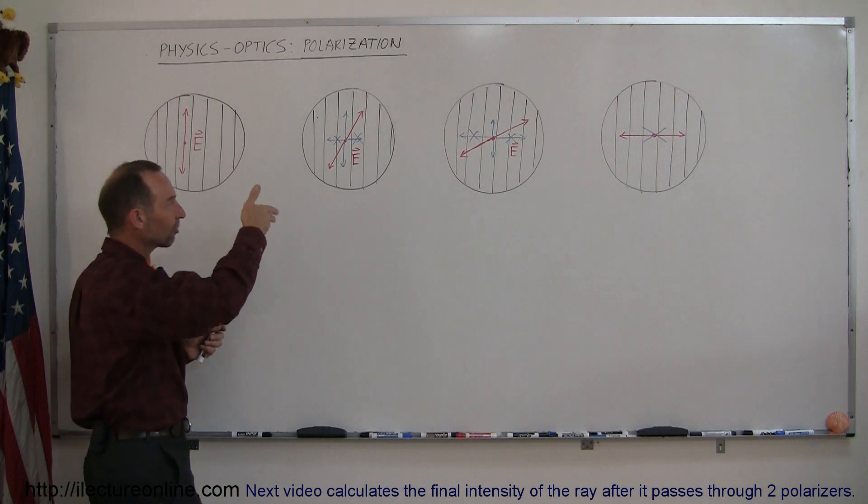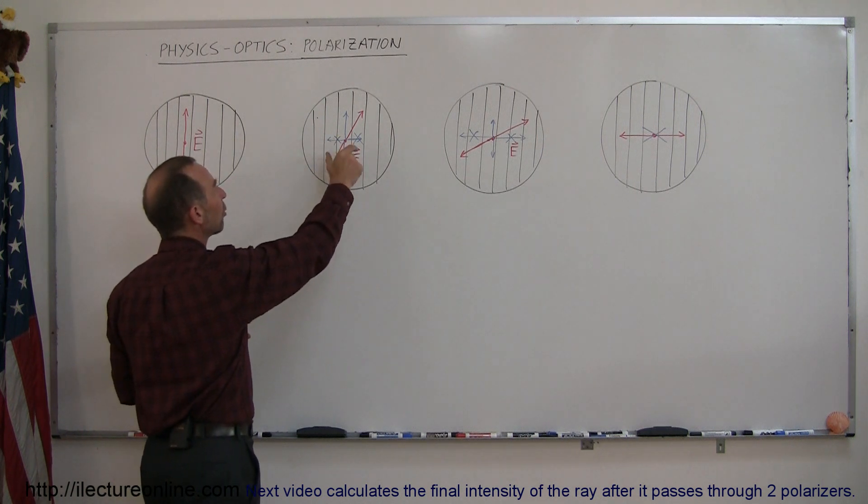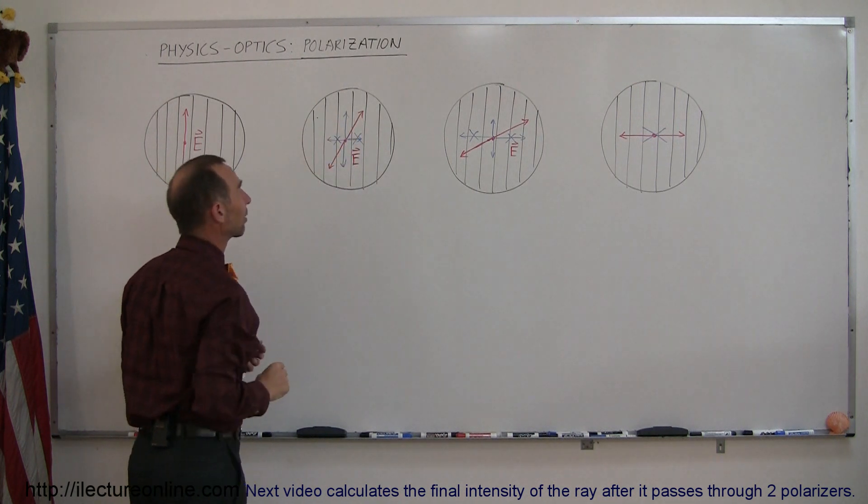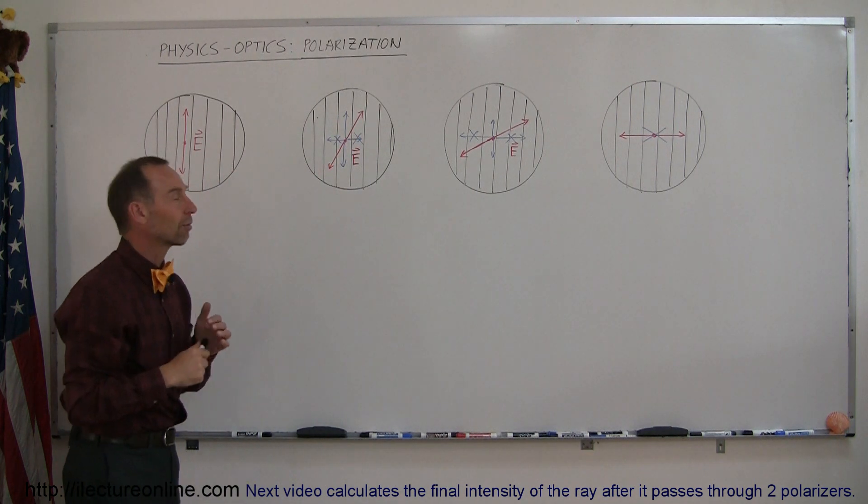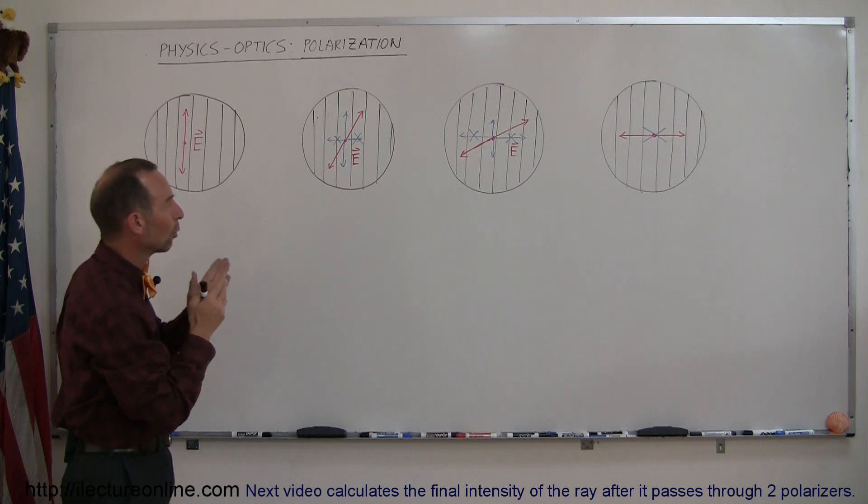But if the electric field oscillations are at an angle relative to the polarizer, then the components perpendicular to the direction of the polarizer will get cancelled out and only the components of the electric field oscillations in the same direction of the polarizer will make it through.